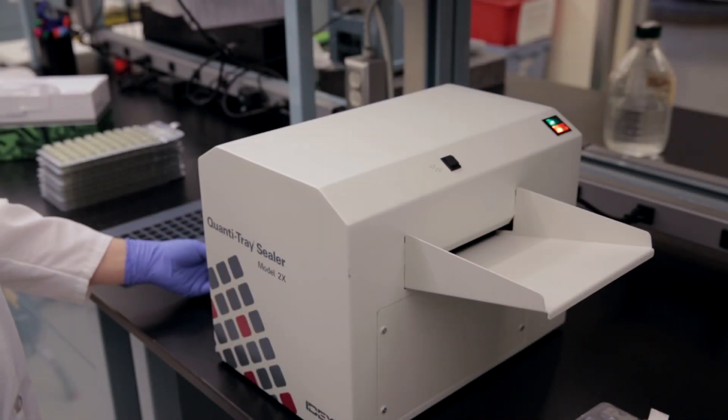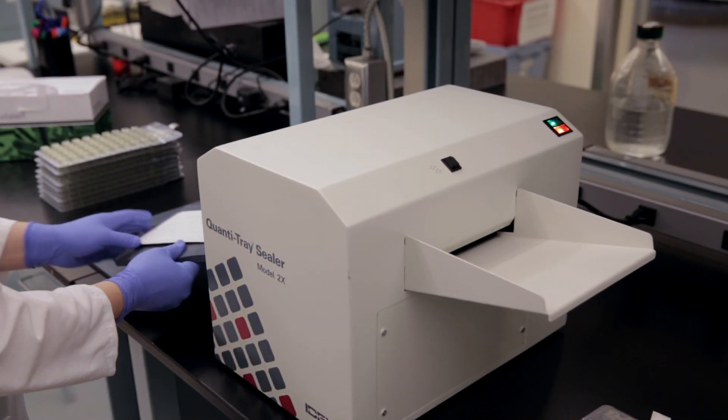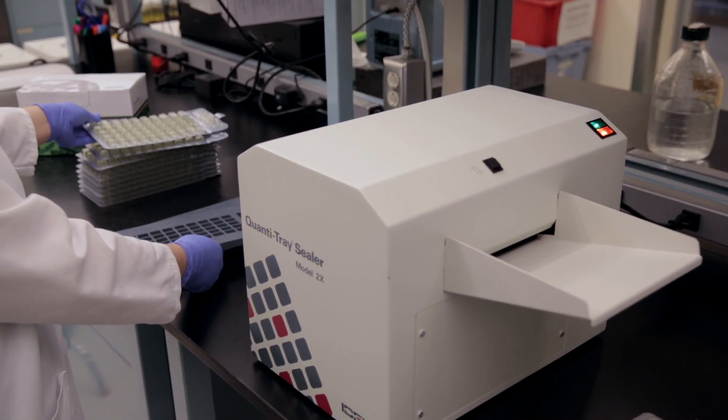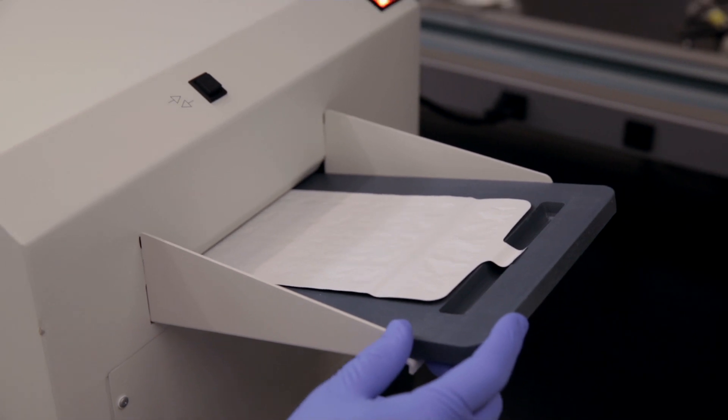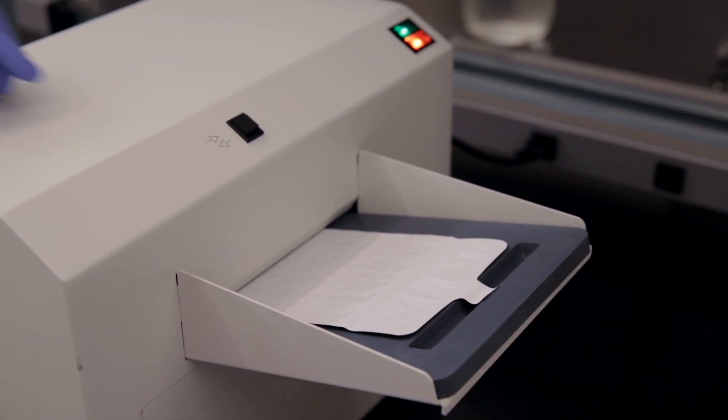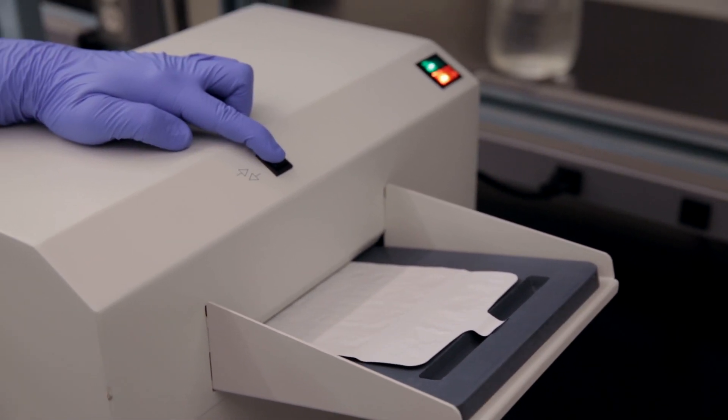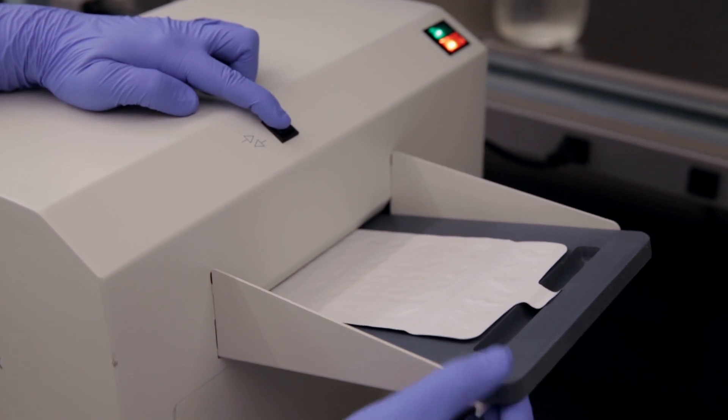In about 15 seconds, the sealer distributes the sample mixture into the Quantitray wells, seals the wells, and ejects the sealed tray. If you need to reverse the motor, press and hold the reverse button. However, do not reverse the motor if the rubber insert is completely inside the sealer.